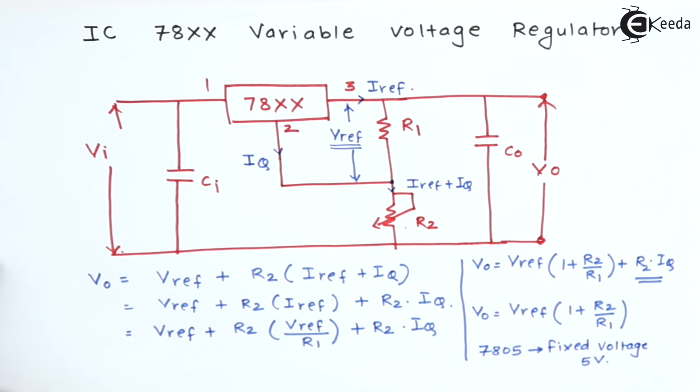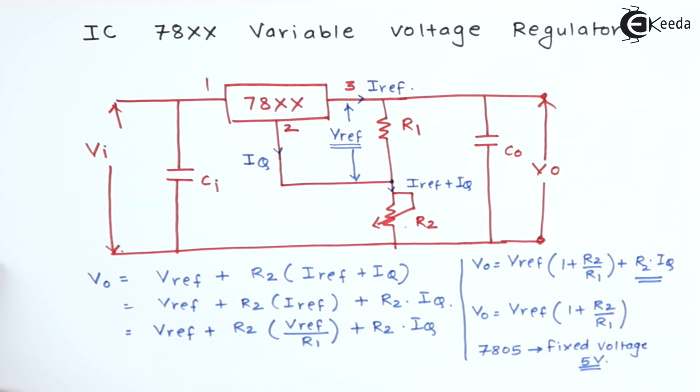The value of the variable voltage is always more than this 5 volt value. These voltage regulators provide output which is more than the fixed value. Vo equals V reference times 1 plus R2 divided by R1.